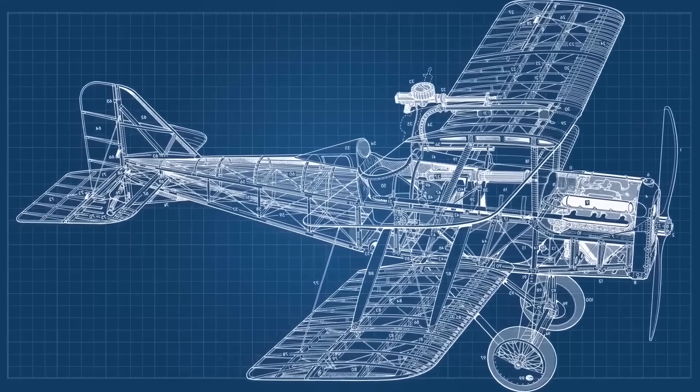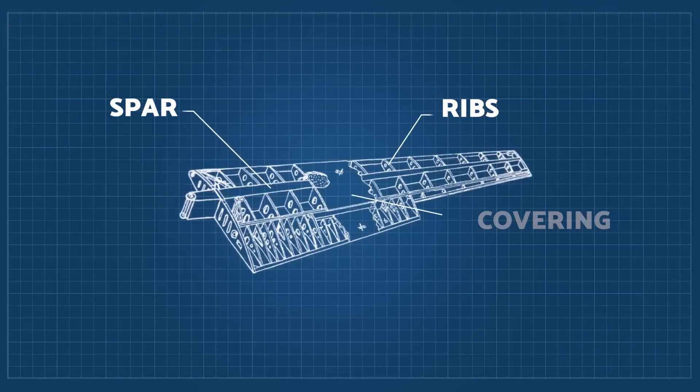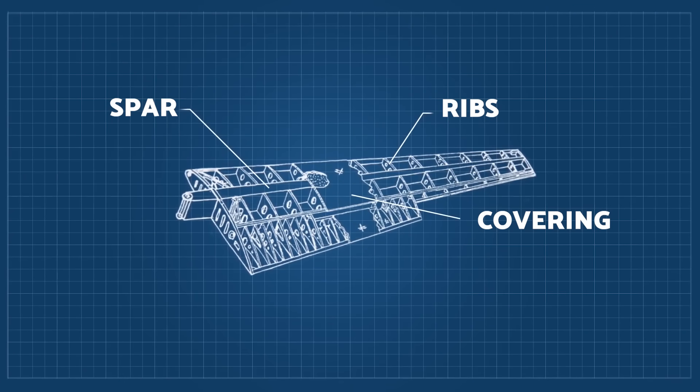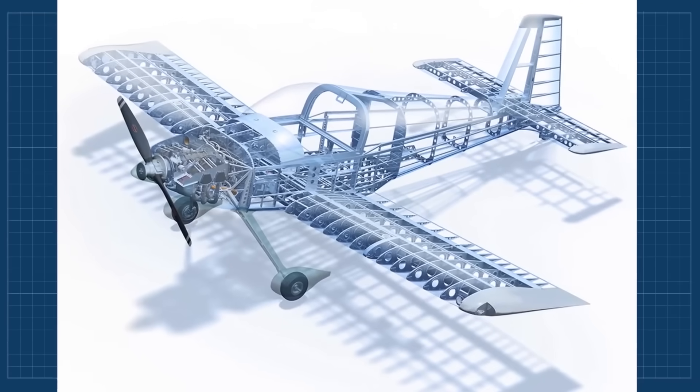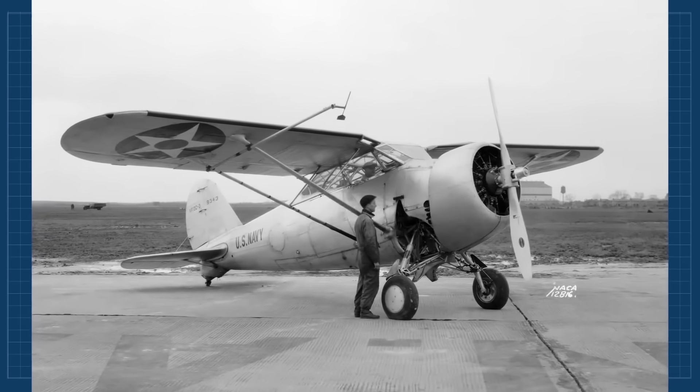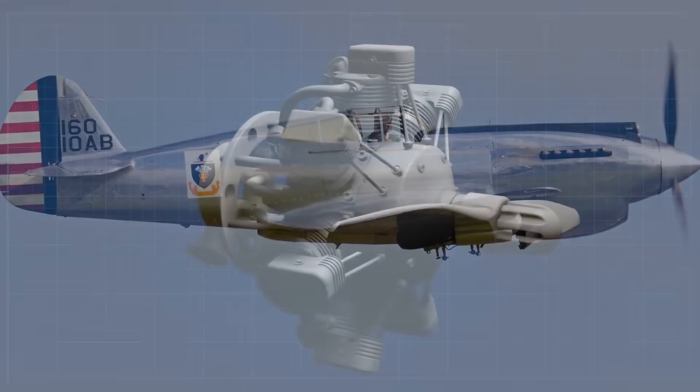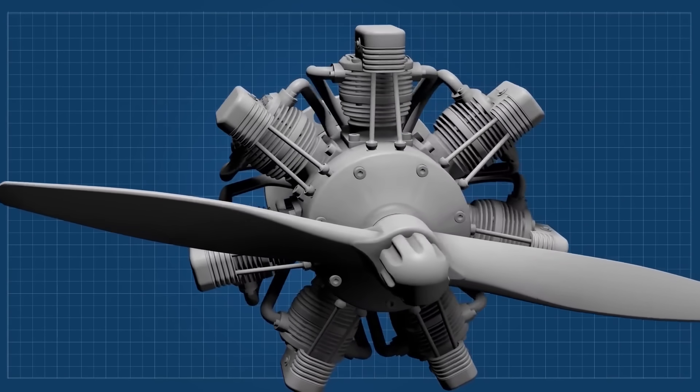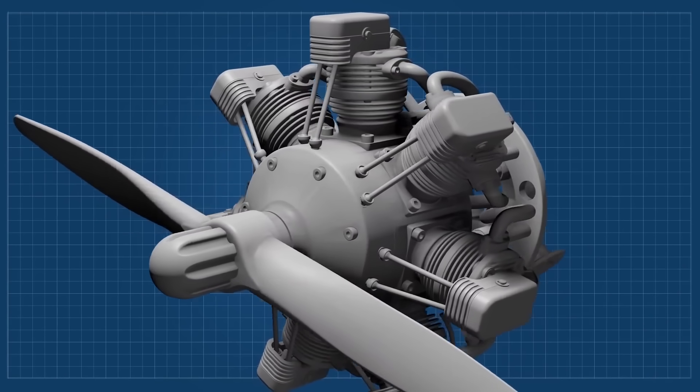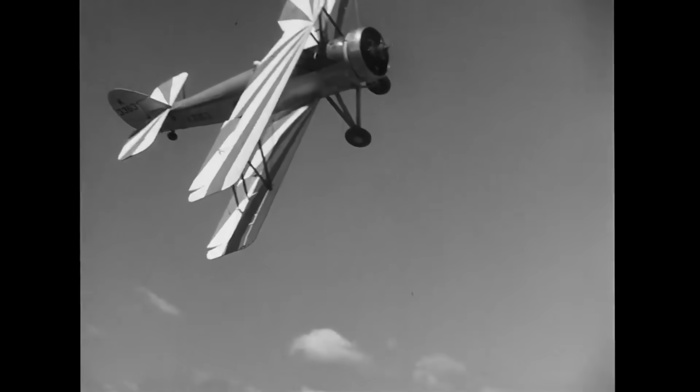After the first world war, aluminum alloys began to be used in aircraft structures, reinforcing the structural performance and allowing the design of monoplanes to be usable. There were also new engines with a better power to weight ratio. After all, the two wings have disadvantages that we haven't mentioned yet.